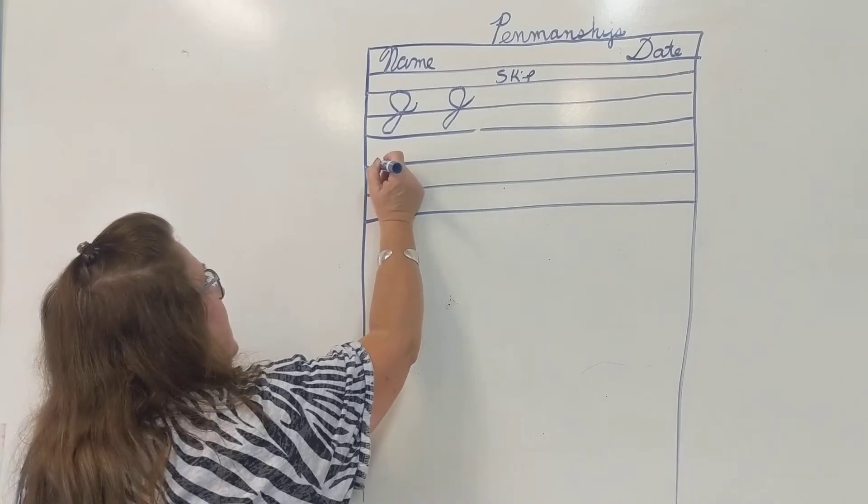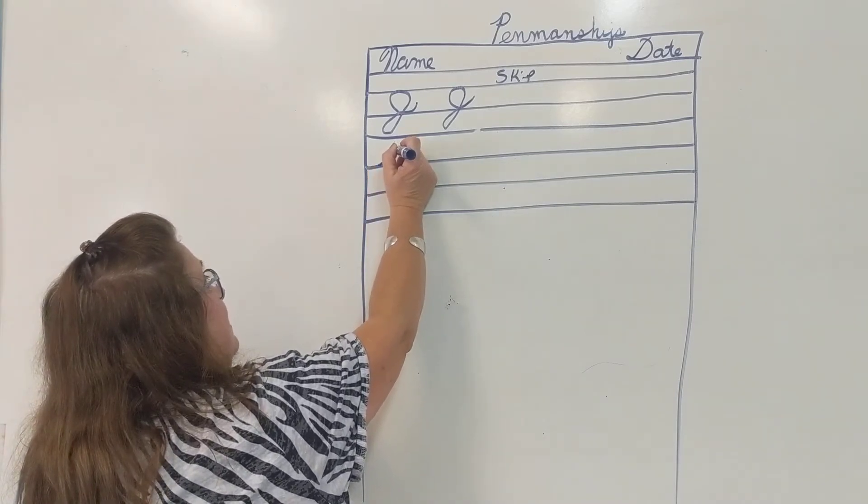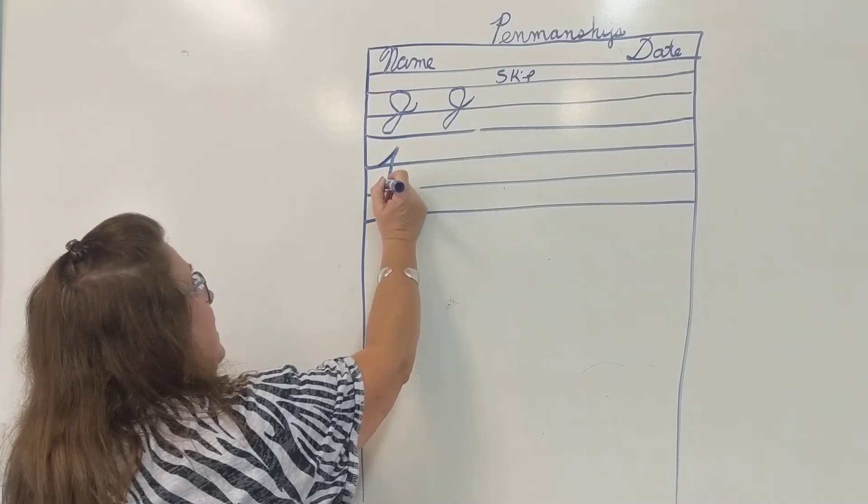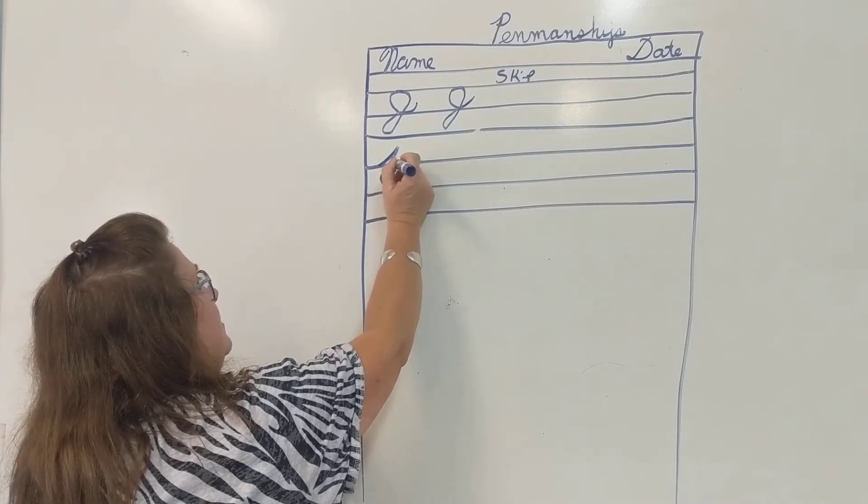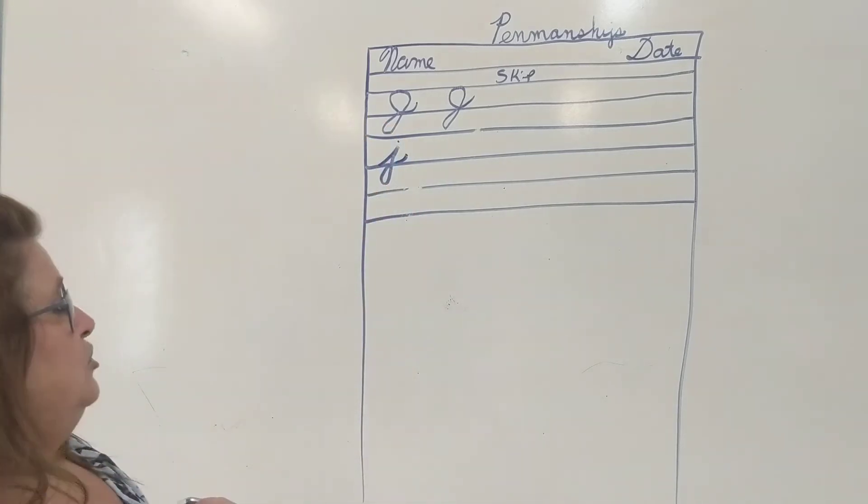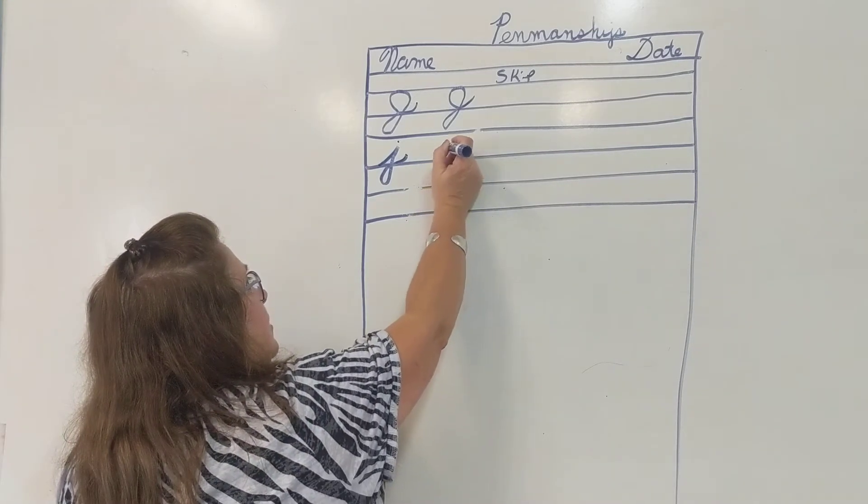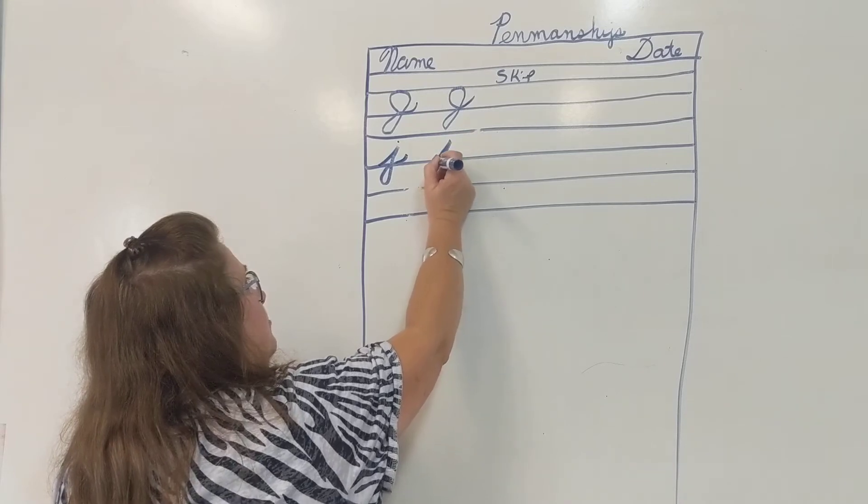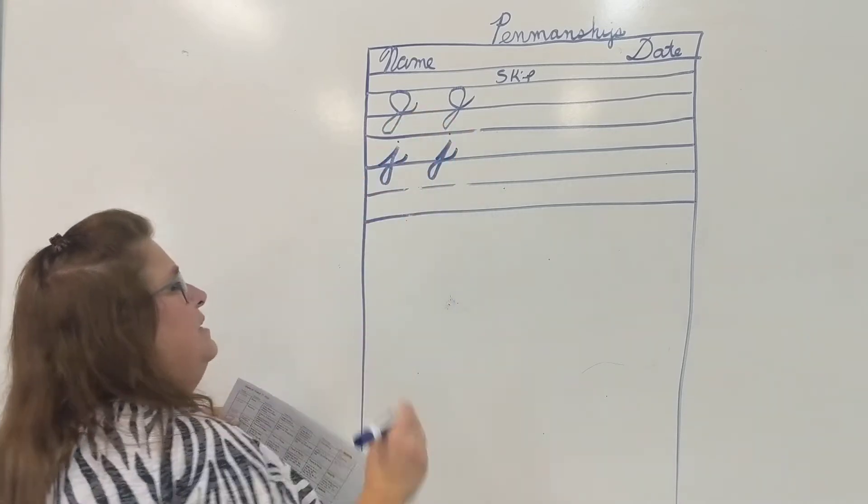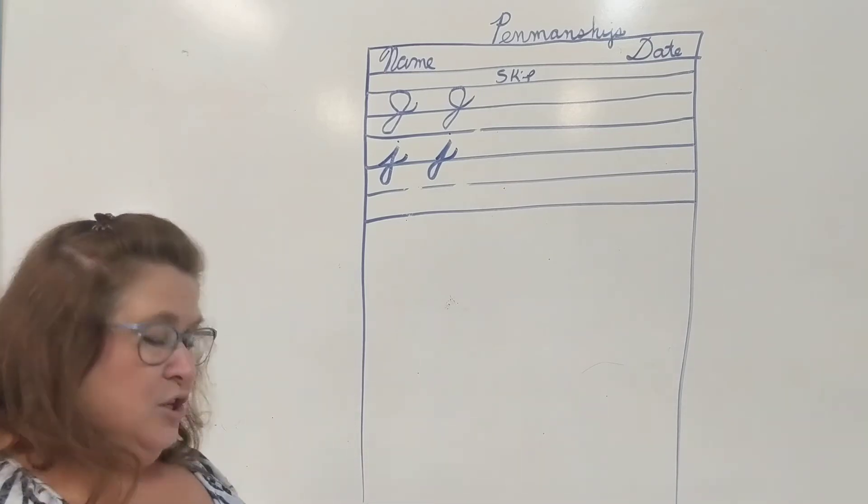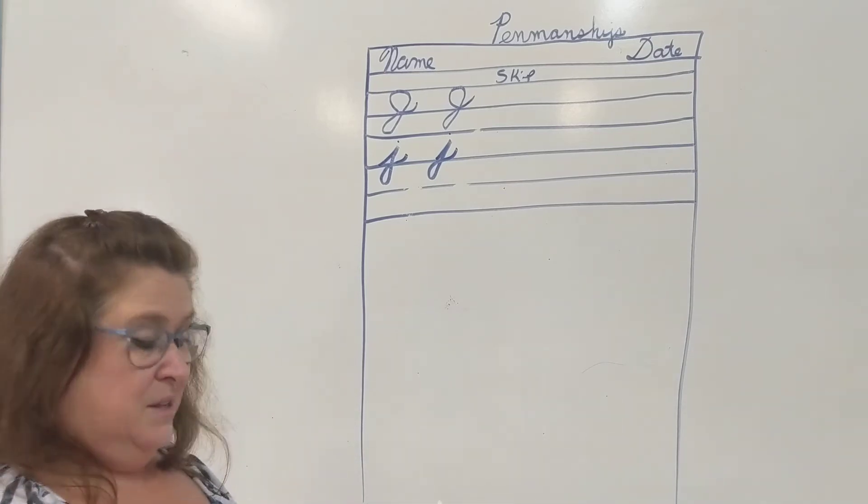So we slant up like we're making an I. We retrace back down like we're still making an I, but we keep going down. And we come around and looped around, cross at the line, swing up with a smile, and dot our J. So J's are kind of like an I with a tail. So here we go. Up, retrace back down, come all the way down, loop around, swing up with a smile, and dot it. That is our J. So you will make five J's.